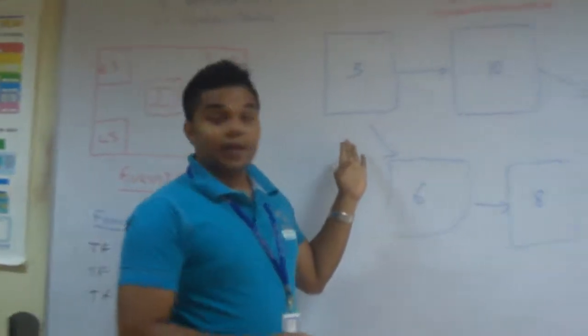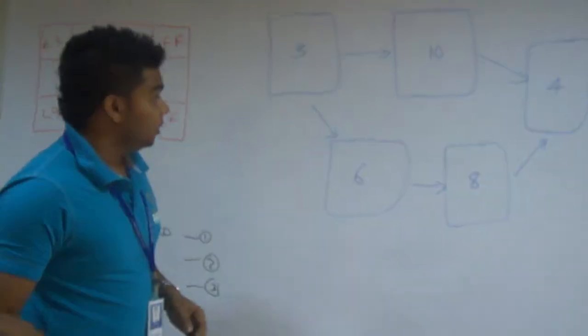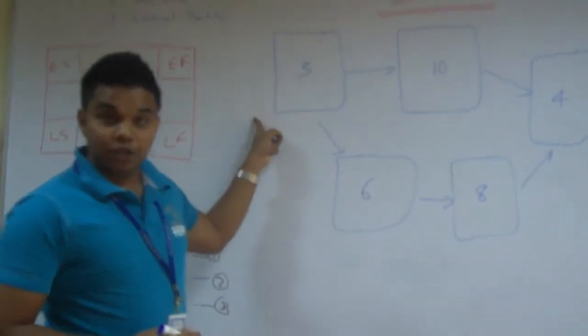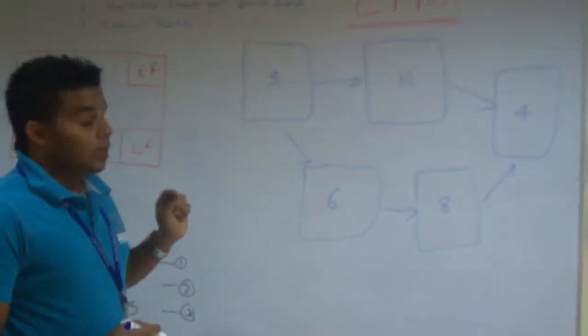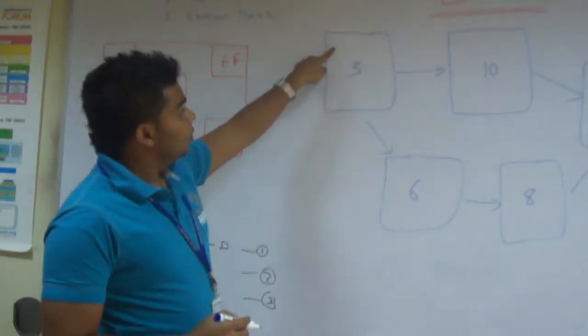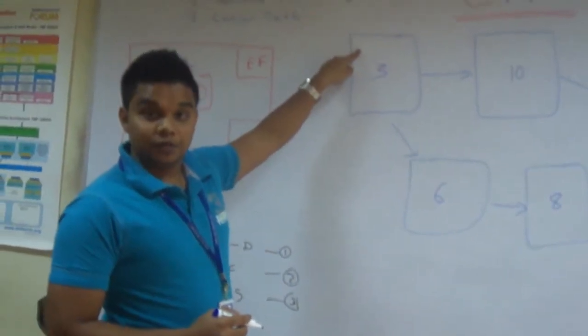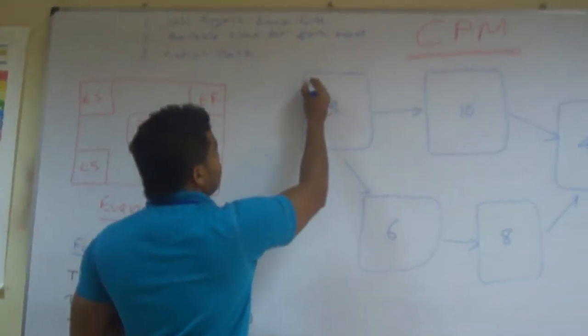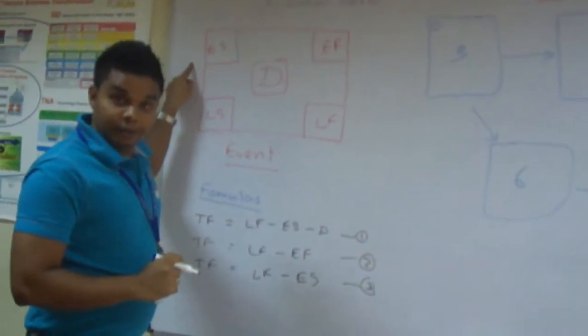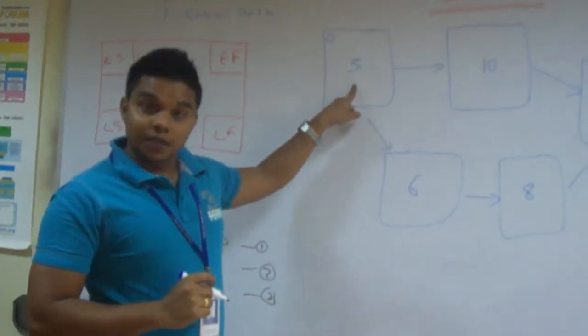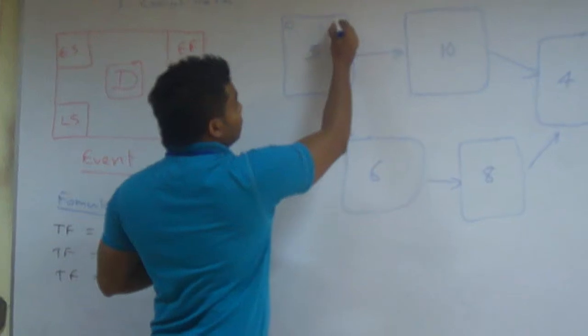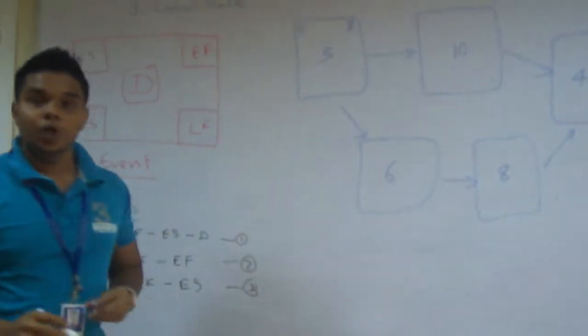So let's do an example. Here I have given a project which has one, two, three, four, five events. So let's see. Now let's assume we will start this event at day zero. Now zero is our earliest start date. So given the duration is three, we will have earliest finishing date of three.